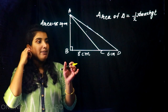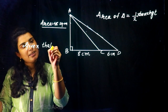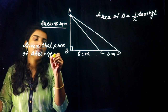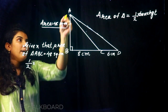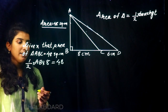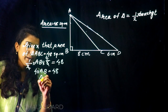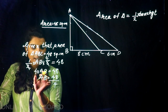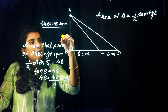The area of triangle ABC is equal to 48 square centimeters. Area equals half into AB into BC. That gives us half into AB into 8 equals 48, so 4 into AB equals 48. Then AB is equal to 48 divided by 4, which gives AB equal to 12 cm.